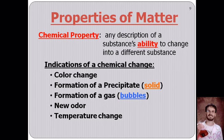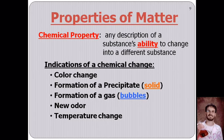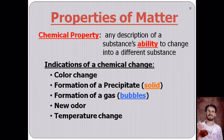If a solution turns from clear to a dark color, or actually changes to a color of the rainbow, that is a strong indication of a chemical change. The formation of a precipitate — a solid floating around in a liquid — is another indicator. If you put a drop of liquid into a solution and a solid forms and sinks to the bottom, a chemical reaction has occurred. Formation of gas like bubbles is another indicator — though the bubbles in soda are not a chemical change; that's just dissolved carbon dioxide being released when pressure changes, which is a physical change.